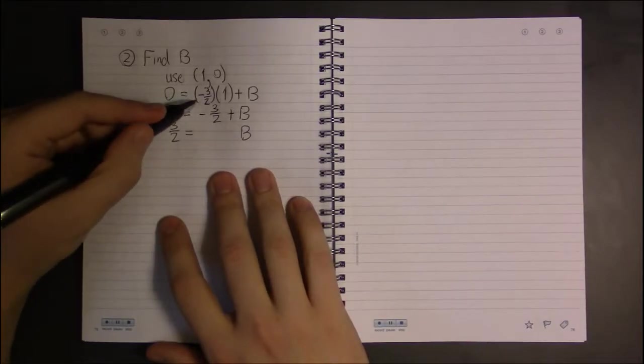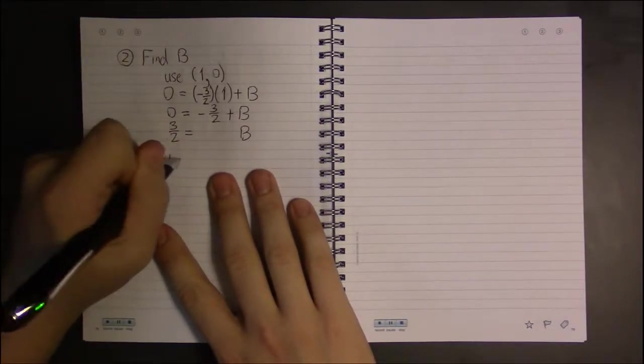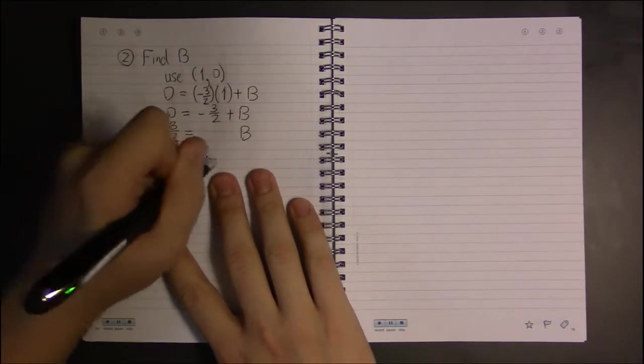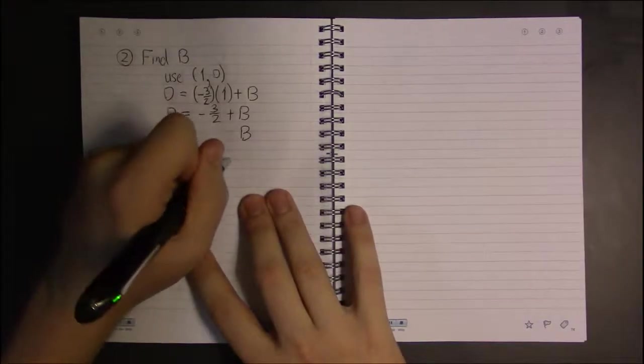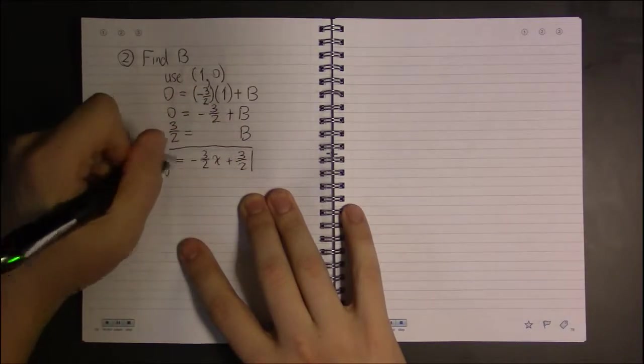So we know m, we know b, so we know our line. Our line is y equals minus 3 halves x plus b, which we found to be 3 halves.